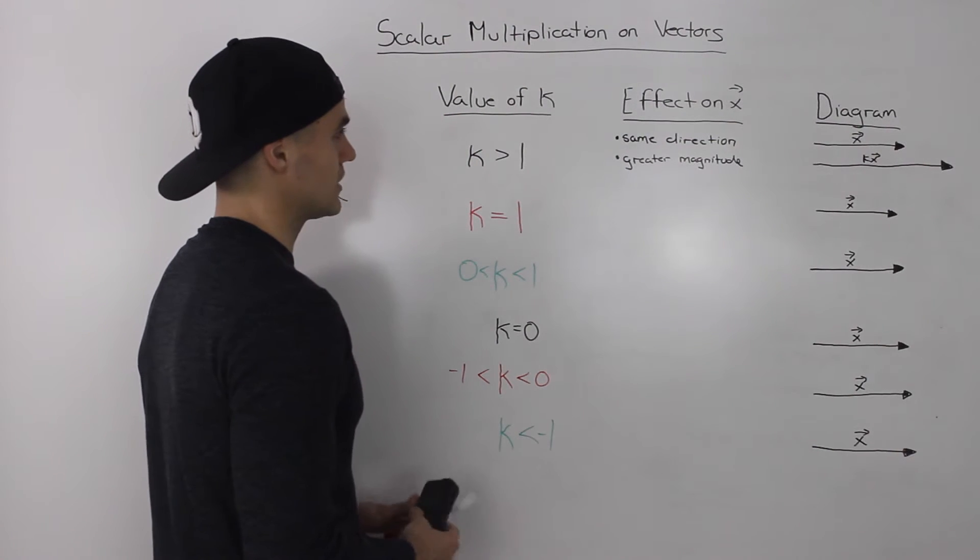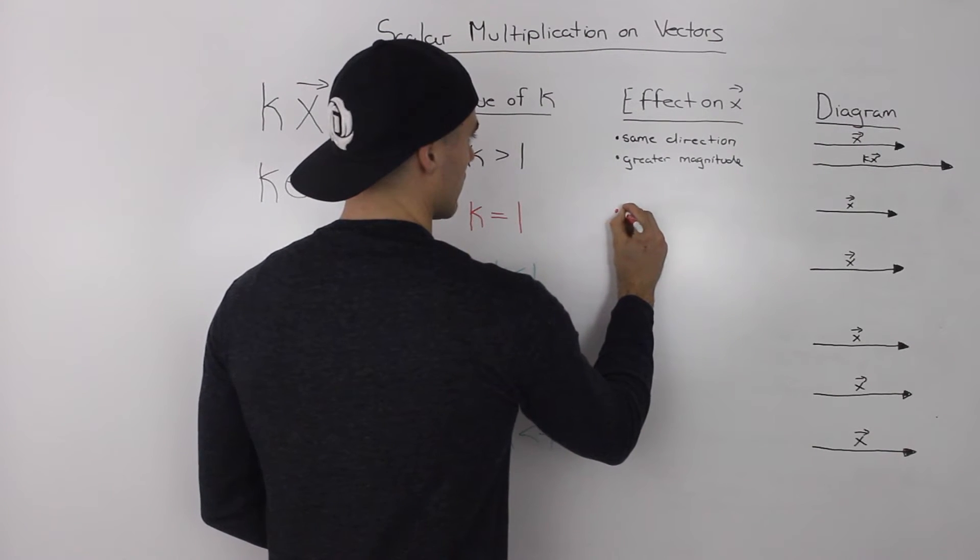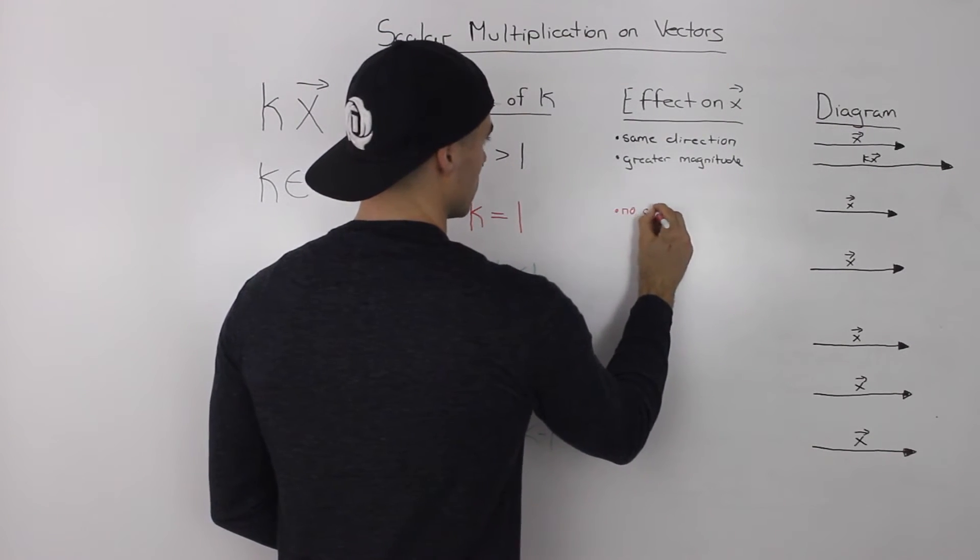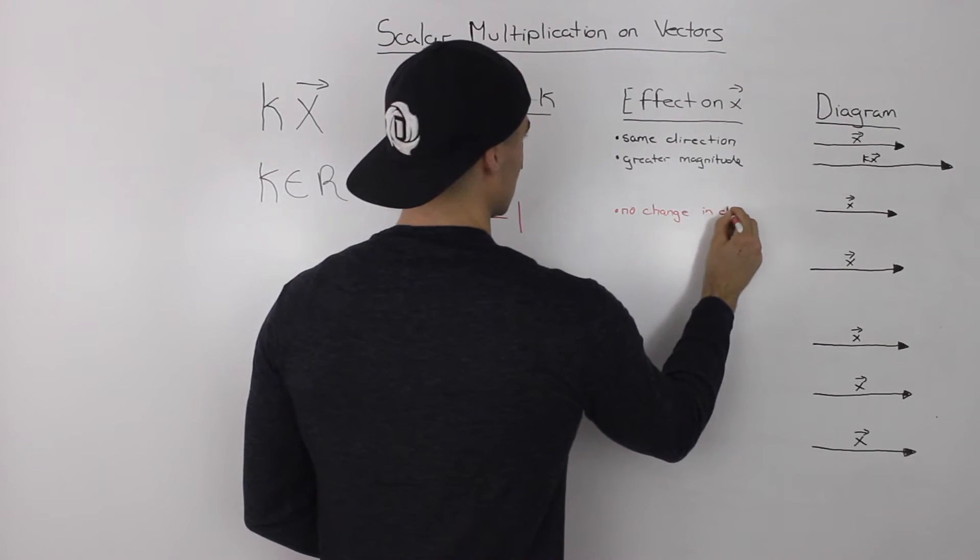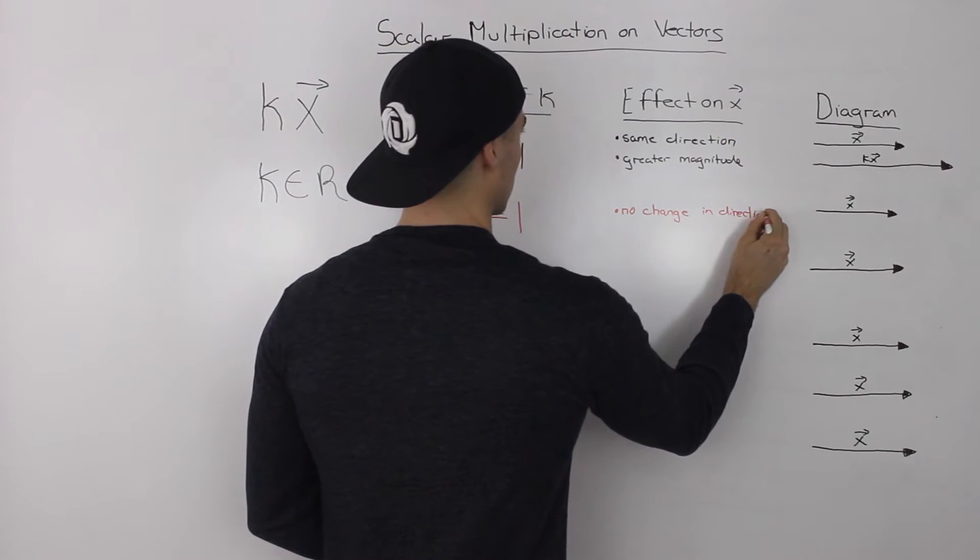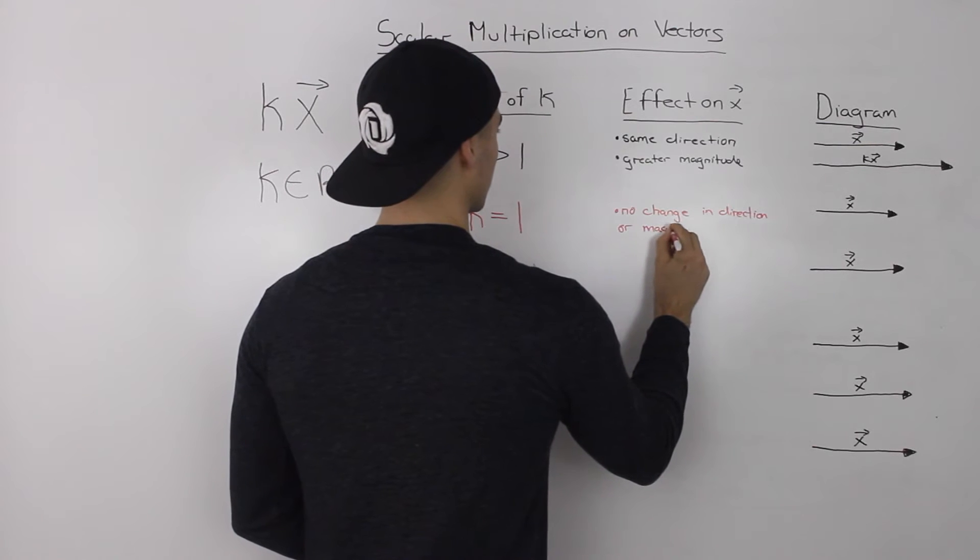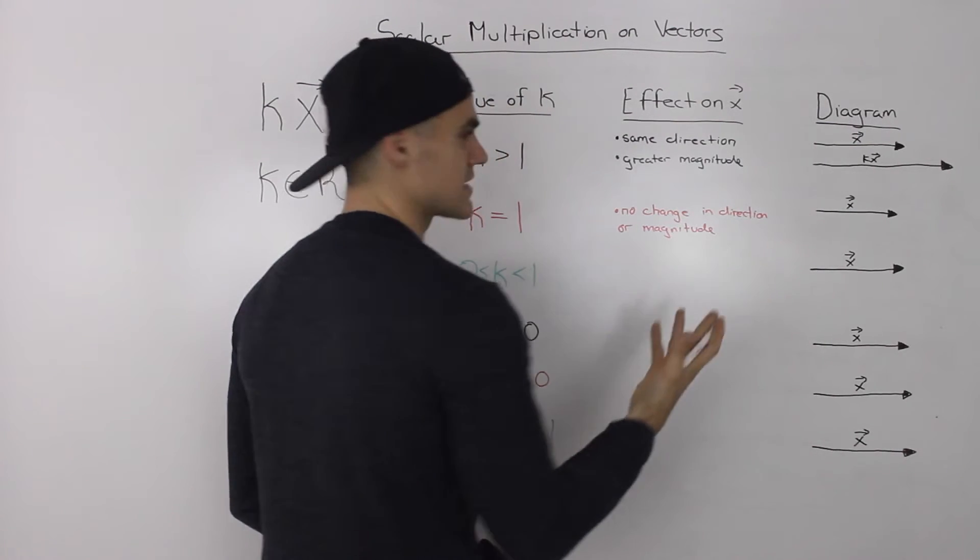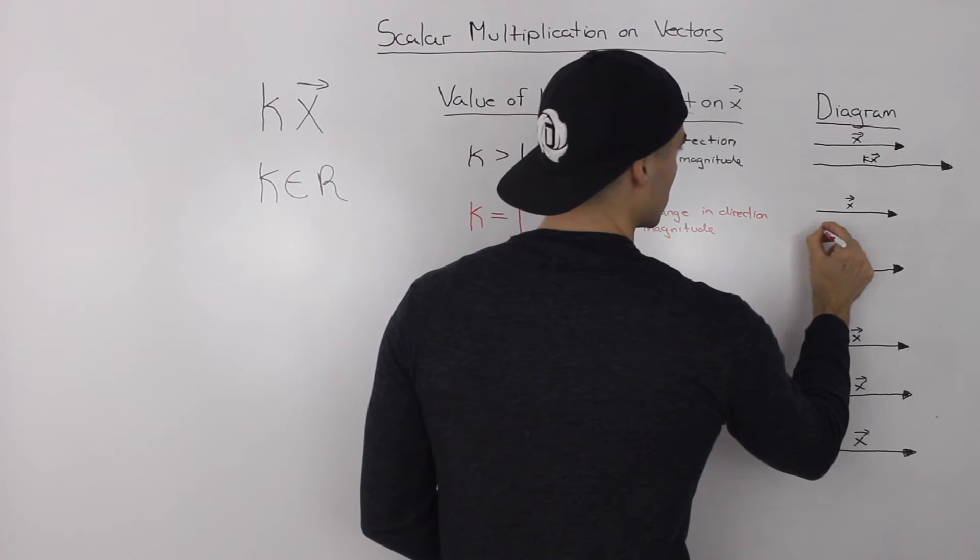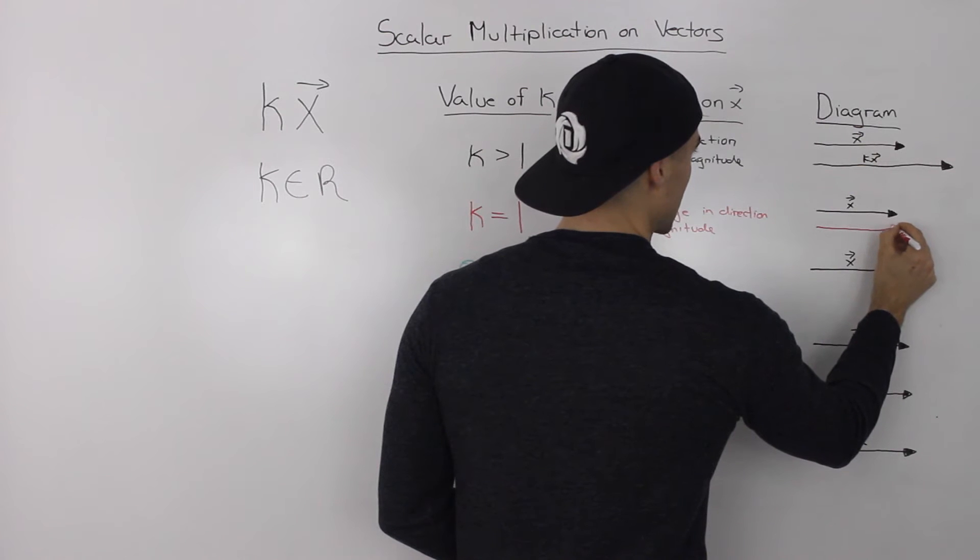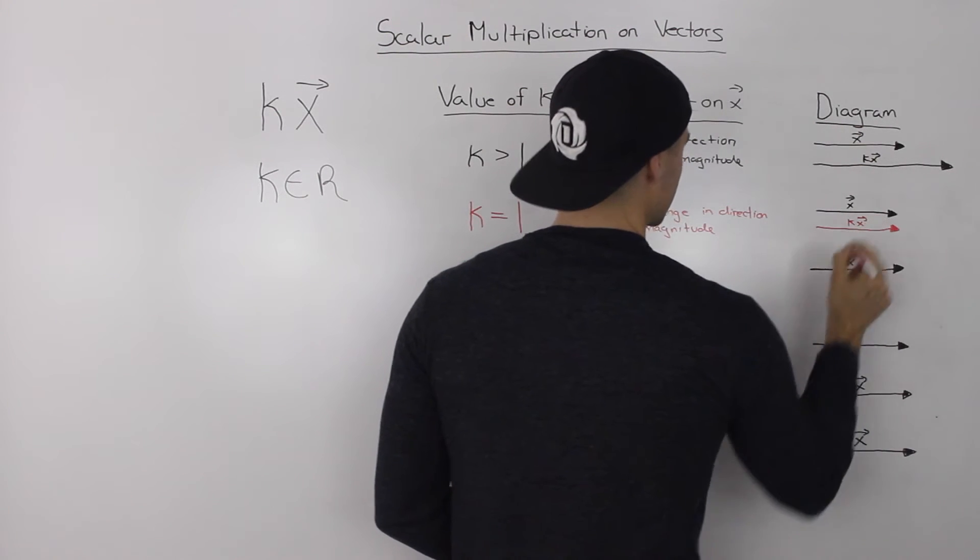Now let's go over the next case. What happens when k is equal to one? Well, when k is equal to one, there is no change in direction or magnitude, which makes sense. We just end up with the same vector when we multiply it by one. So that vector would look exactly the same as our original.